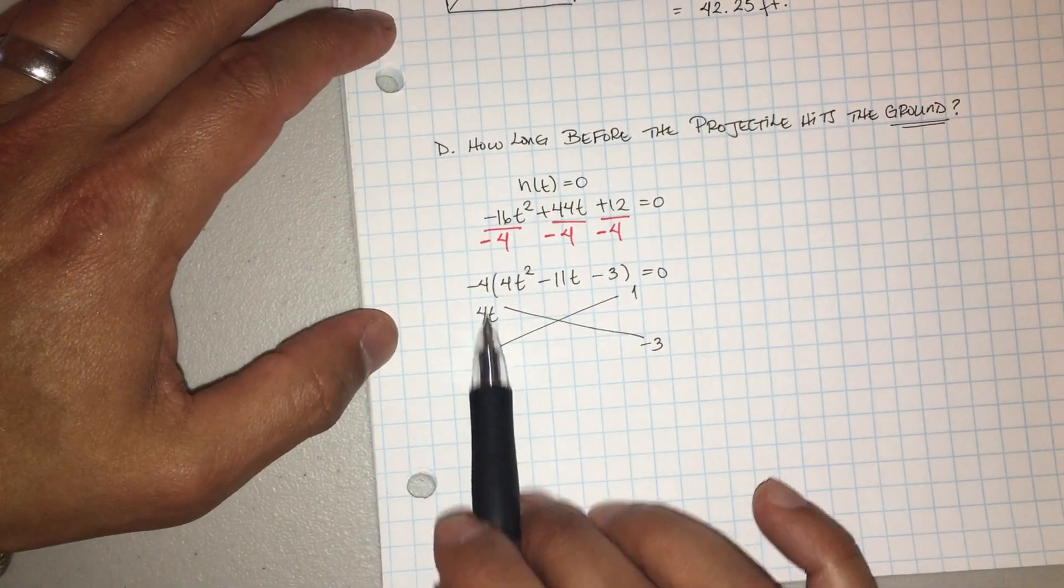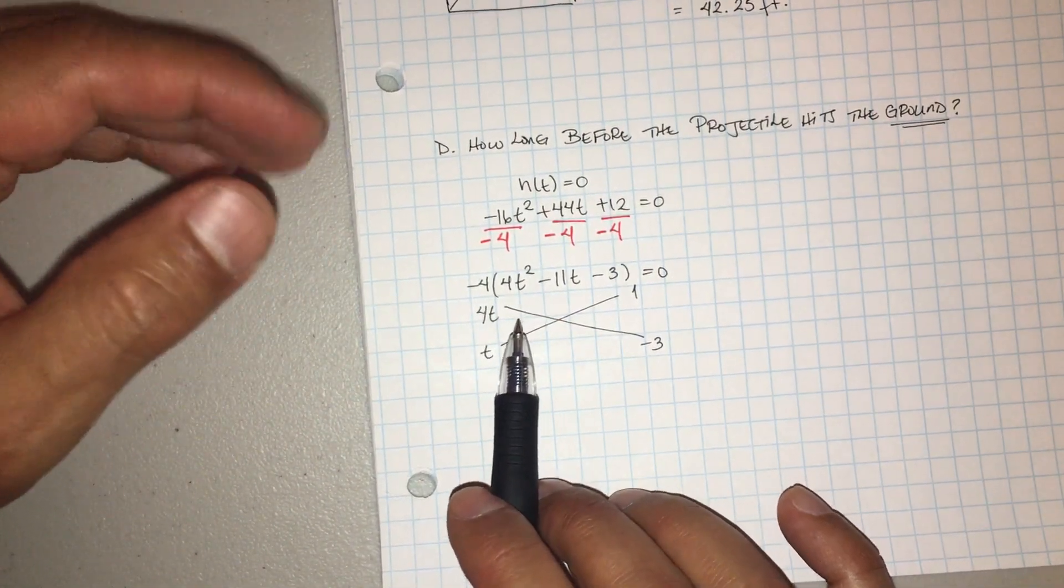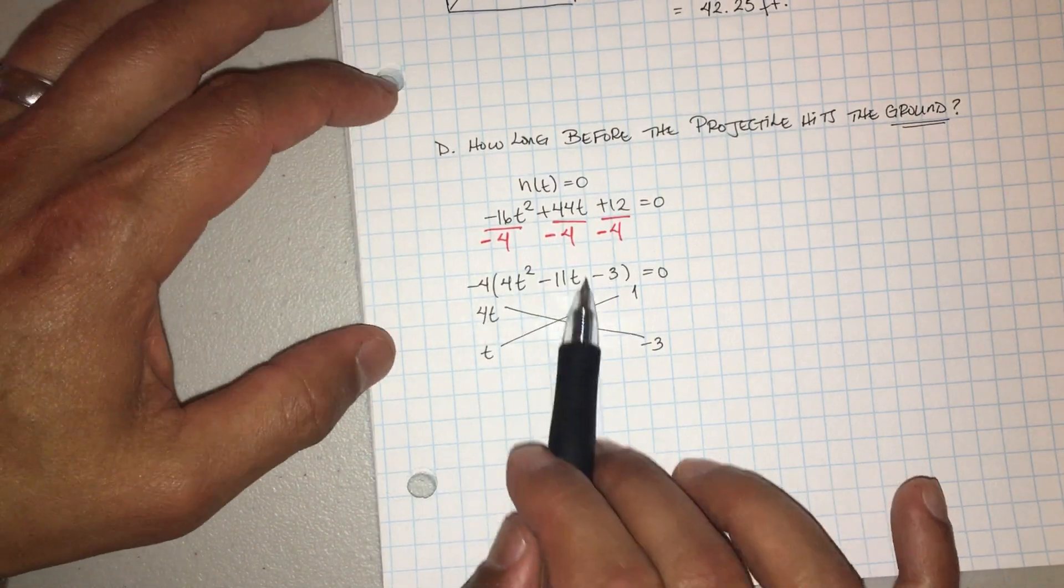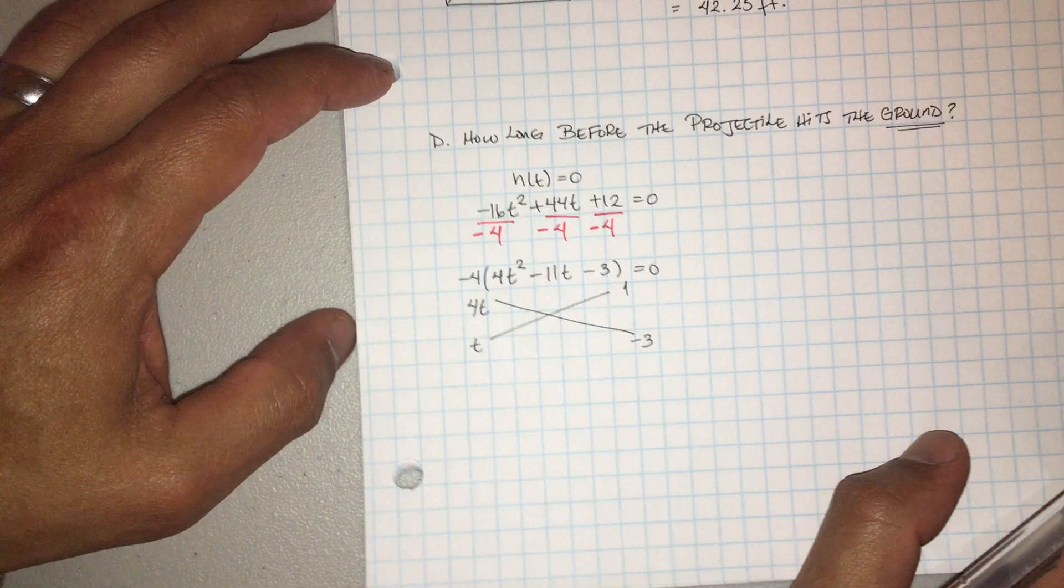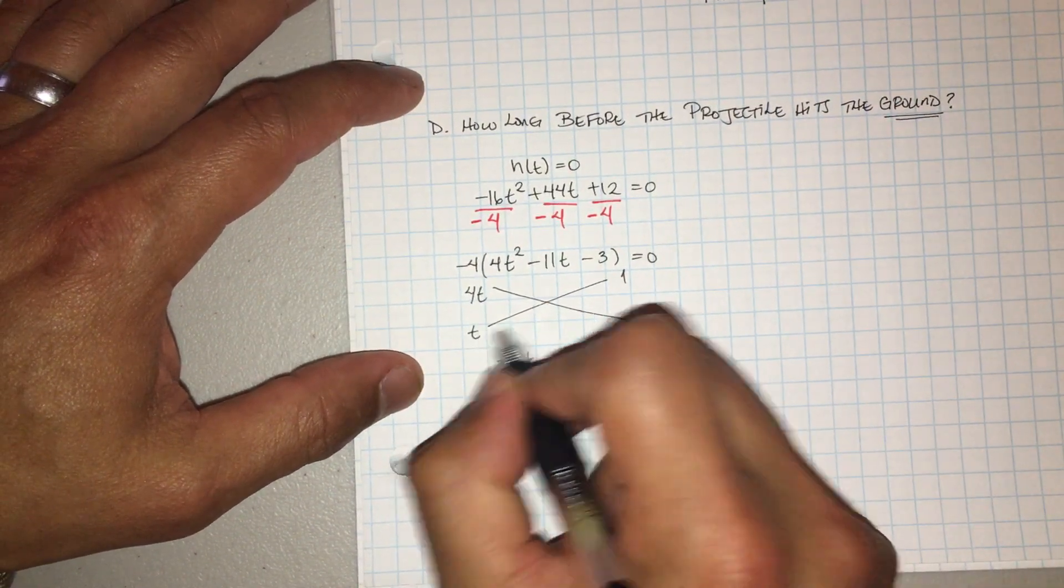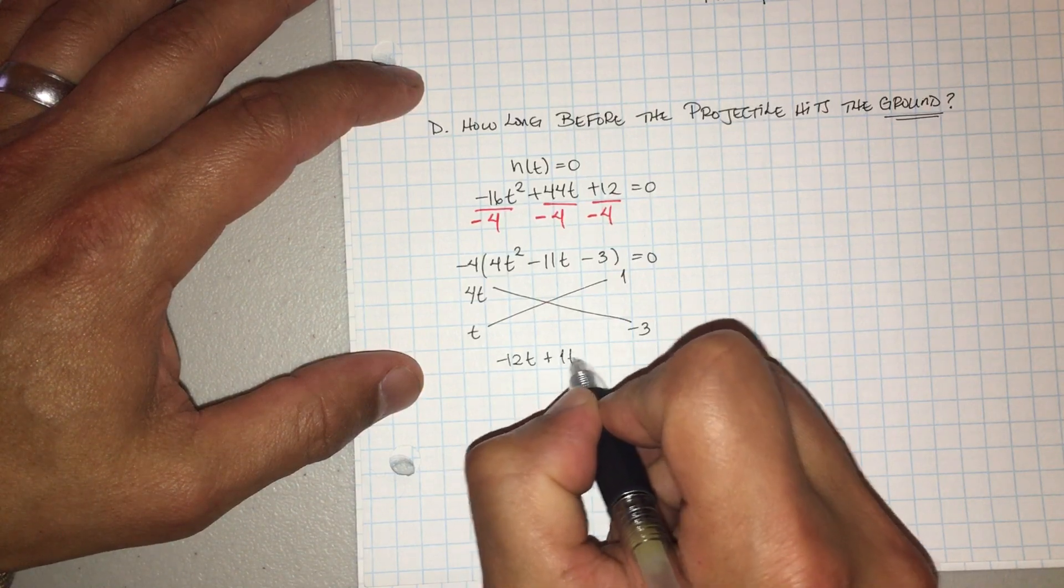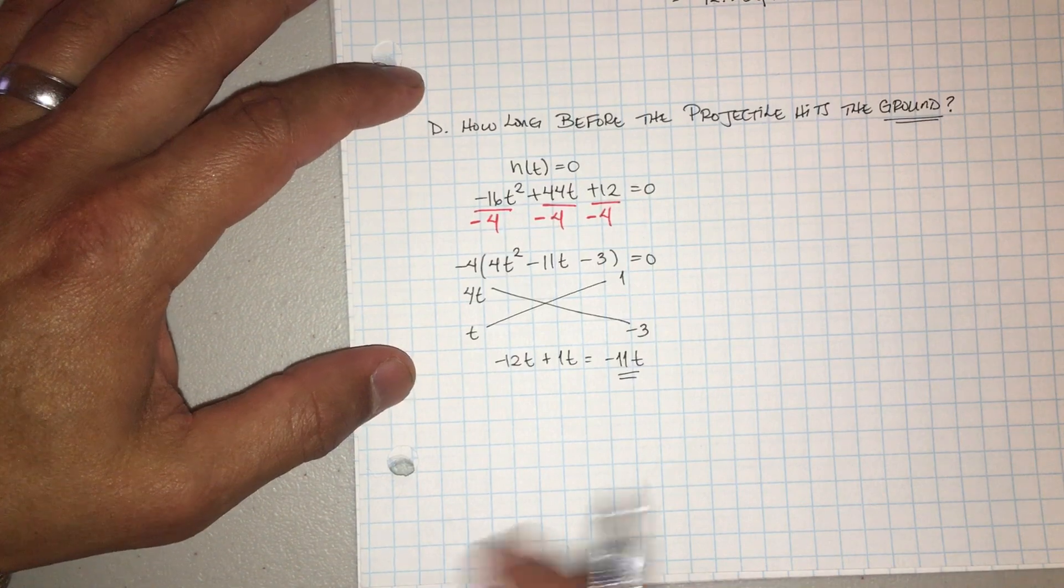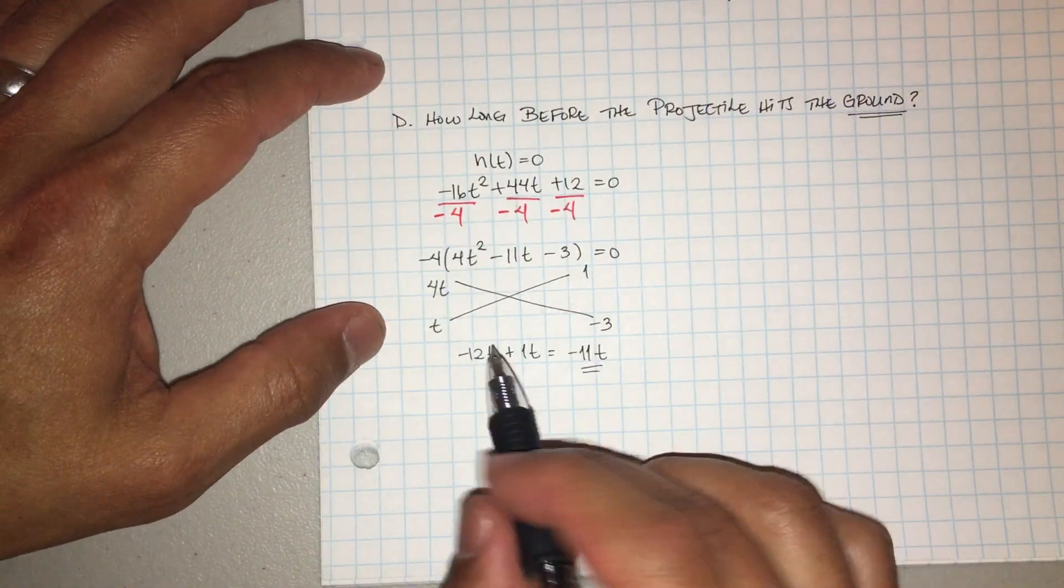Can you use two and two? Pueden usar dos y dos? Si se puede usar pero van a ver que no les va a dar el resultado. You can use two and two but you're going to find out it's not going to give you that negative 11t. Okay, so here if you notice, four t times negative three, that's going to give me negative 12t. T times one is positive one, and when I combine that, that's going to give me the negative 11t that I wanted.